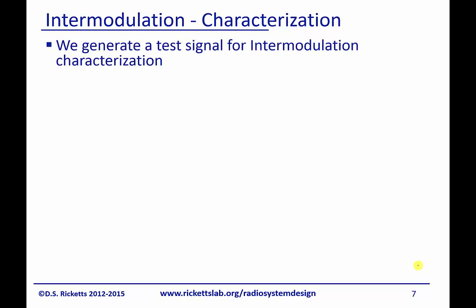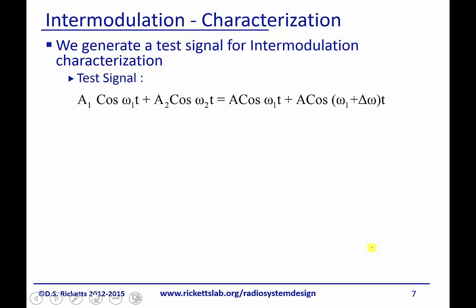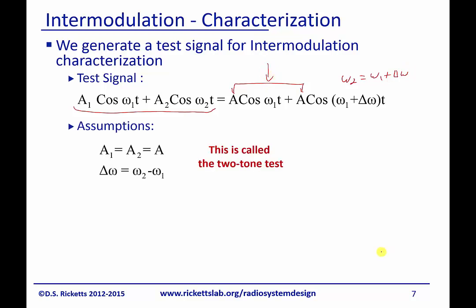So we generate a test signal for our intermodulation characterization, and what we do is we use a test signal that simply has our two input signals that we used before, and what we've done is we've made them have the same amplitude. And I've just defined Omega 2 equal to Omega 1 plus Delta Omega, and that's for convenience that we'll see later. Really the only caveat that's changed is we've said they've got the same amplitude.